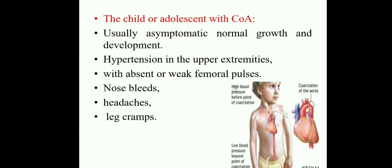In older children, the child or adolescent with coarctation of aorta is usually asymptomatic with normal growth and development. What are the clinical features in that age group? Hypertension in the upper extremities — because high blood pressure is there in the upper extremities, the systemic circulation is high. There is also absence or weak femoral pulse. We can easily recognize that a child is suffering with coarctation of aorta when there is hypotension in the lower extremities and hypertension in the upper extremities.